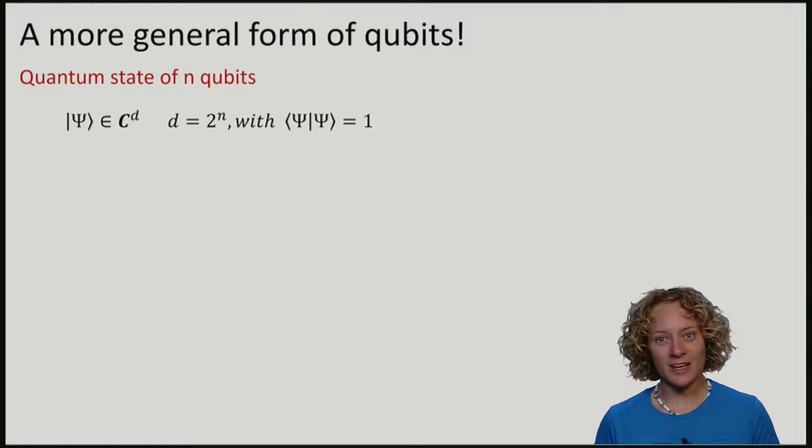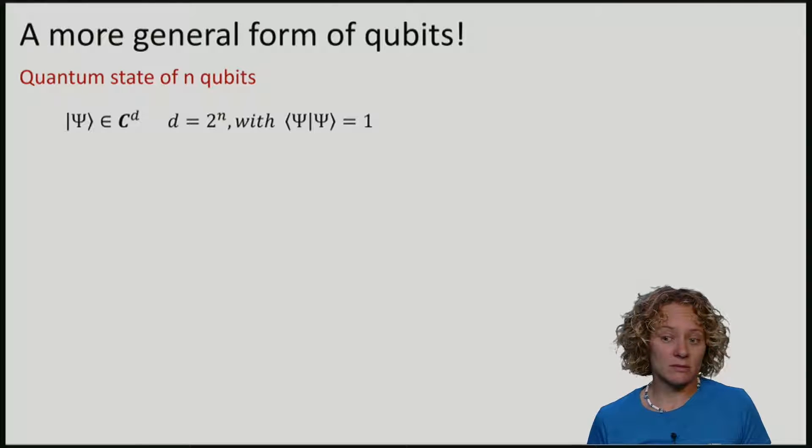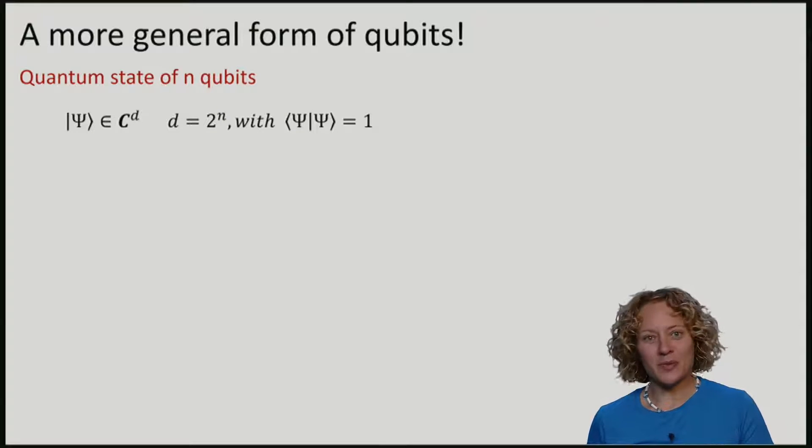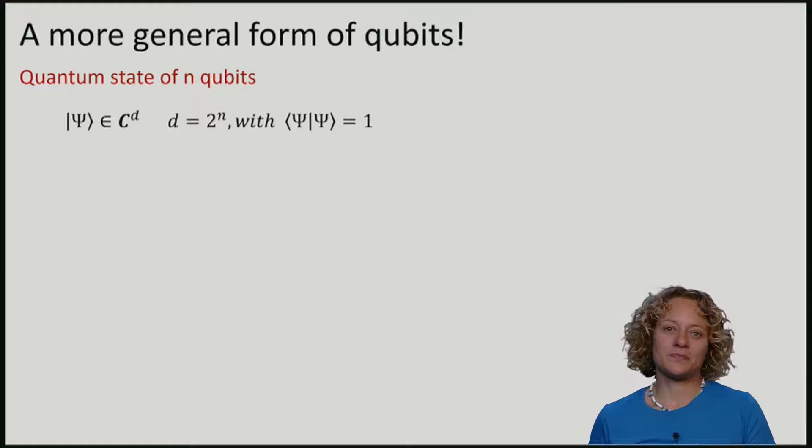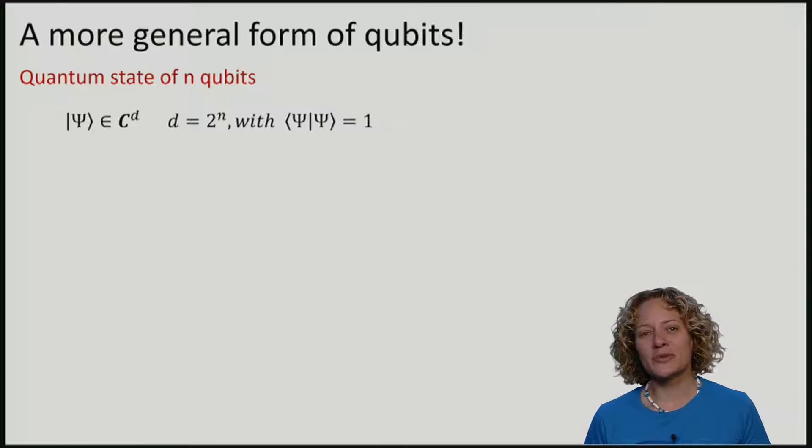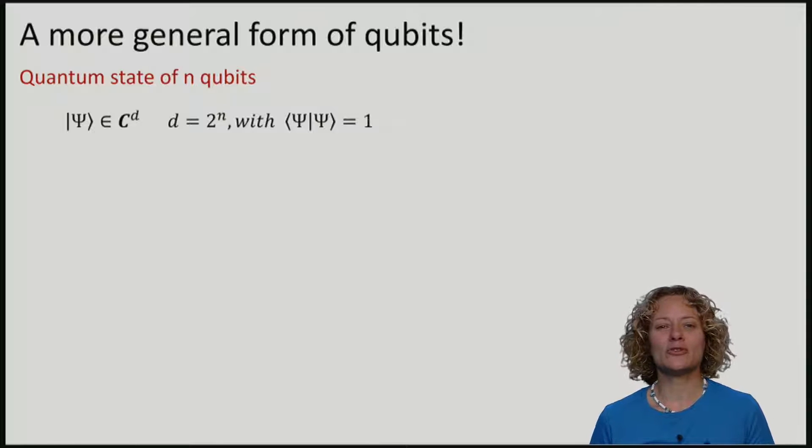You might be asking, why do we need a more general mathematical description? What's wrong with these vectors? There are two problems if we are talking only about vectors, and the first one arises if we think about two qubits.